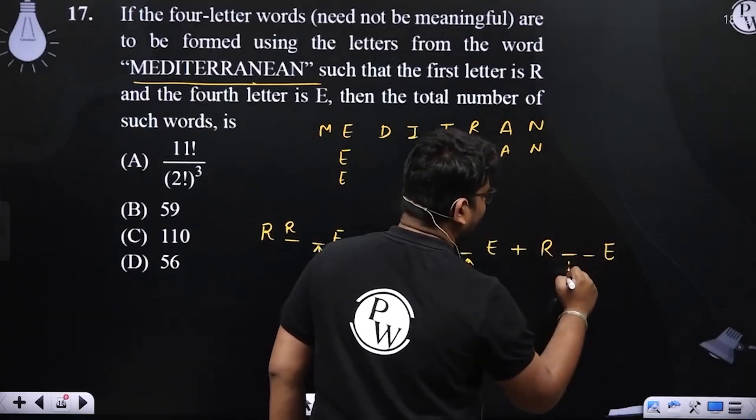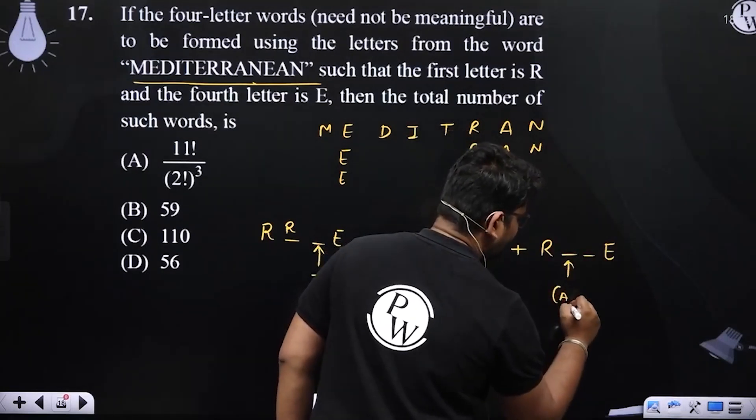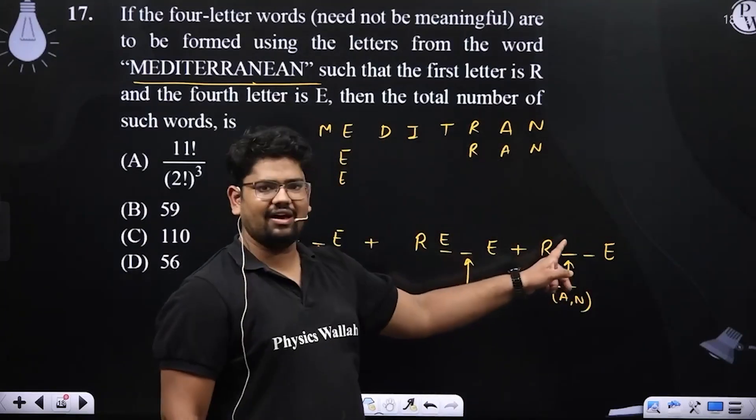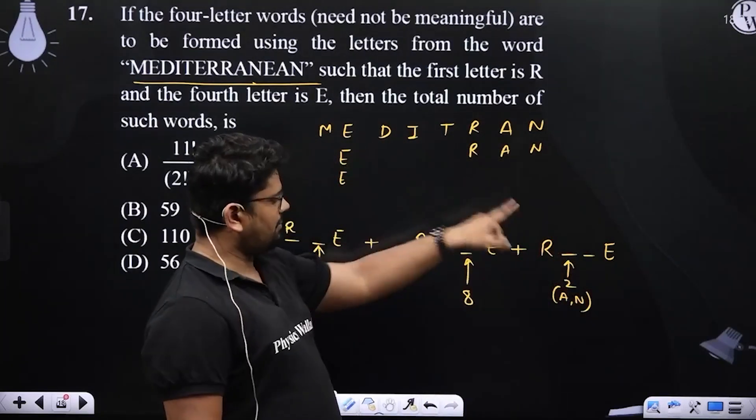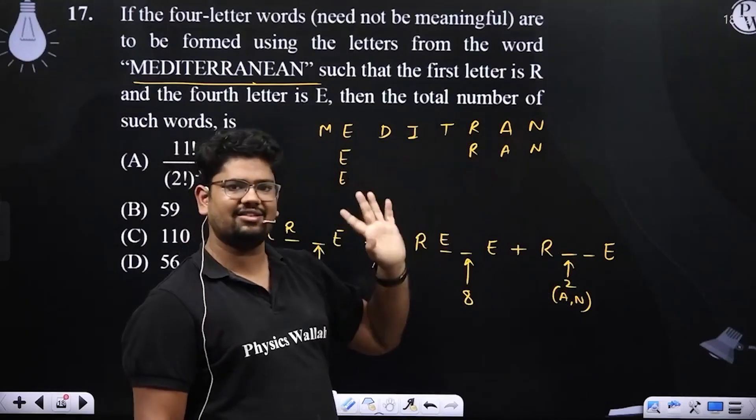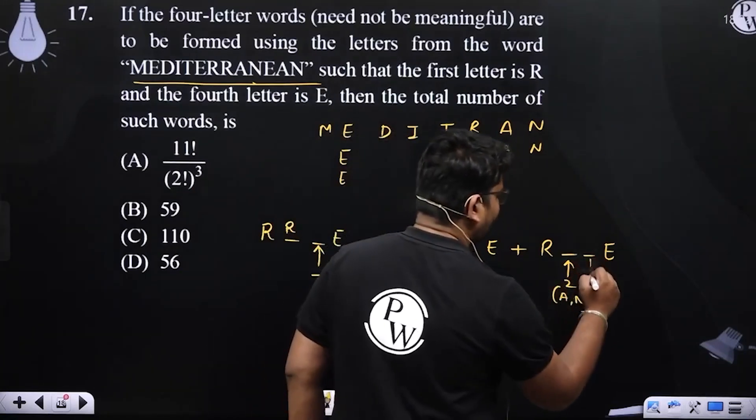If you look at this place, A or N. A or N. So this is two choices. Now I am going to write A for example. So the third place is available: E, D, I, T, R, A, N are available. So eight choices here.